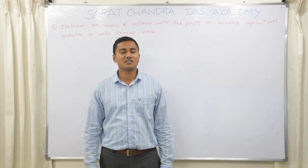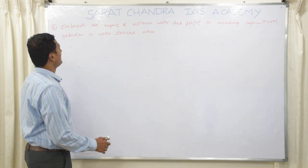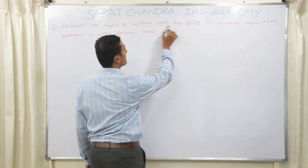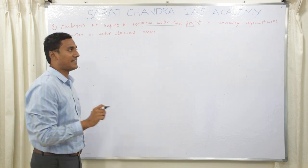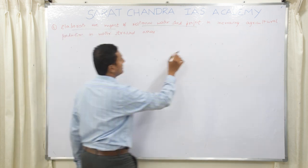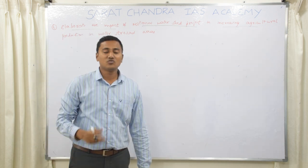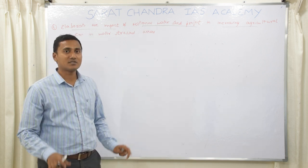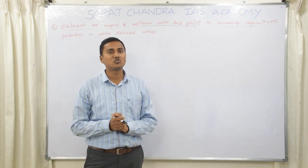Let us discuss the fourth question: elaborate the impact of the National Watershed Project in increasing the agri-risk production in the water stressed areas. As you know, the NEERANCHAL National Watershed Project is presently running in India, started in 2016 and will continue until 2021.